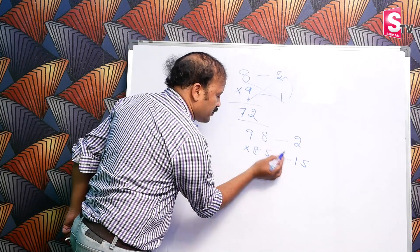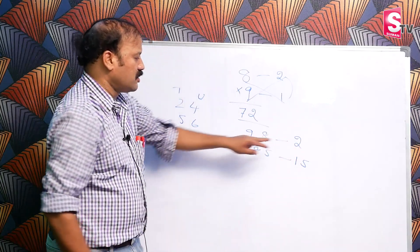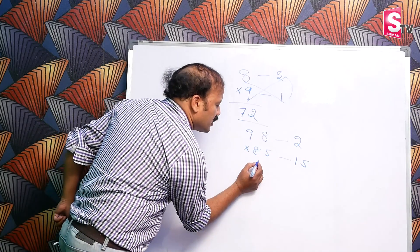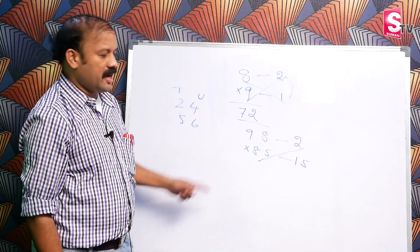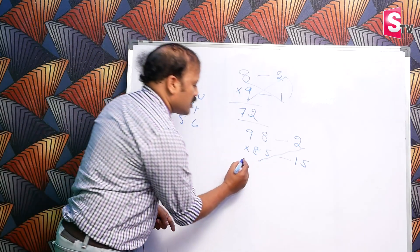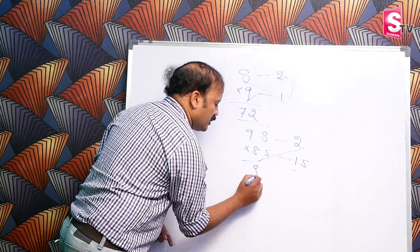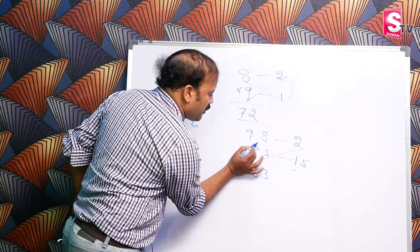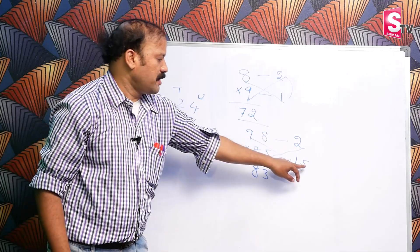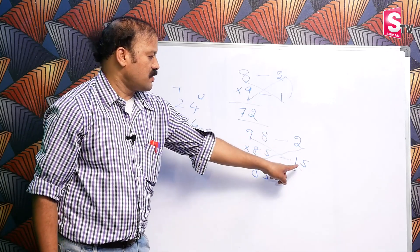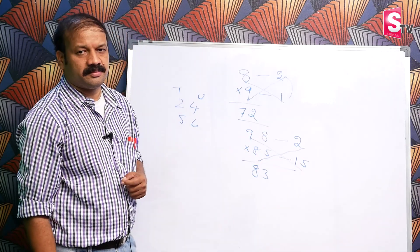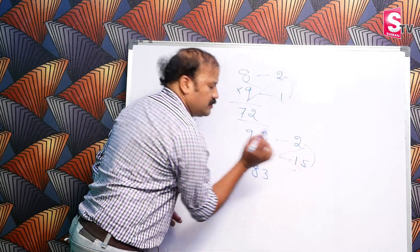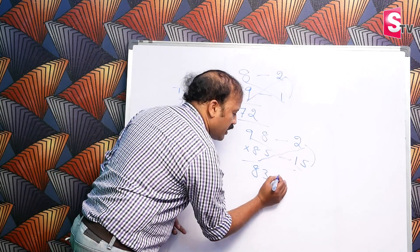98 is closer than 85 to 100. So now it will be 85 minus 2—what is the number? 83. And 98 minus 15: 8 minus 5 is 3, 9 minus 1 is 8. Same: 83.